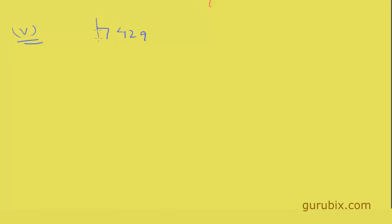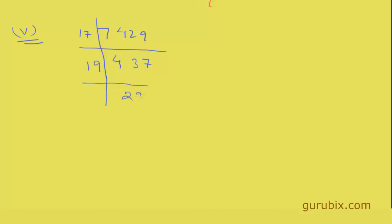Now for the fifth and last part — 7,429. We see that this number is divided by 17, and we get 437 as quotient. Again we see that this number is divided by 19 to get 23. Dividing 23 by 23 we get 1. Therefore, 7,429 = 17 × 19 × 23. This is our answer.